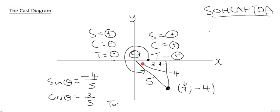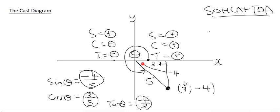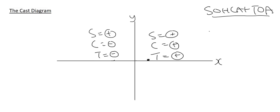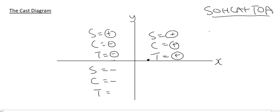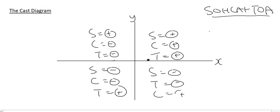Sin theta is the opposite, which is minus 4, over the hypotenuse of 5. Cos theta is the adjacent, which is 3, over 5. Tan theta is opposite over adjacent: minus 4 over 3. So sin is negative, cos is positive, and tan is negative. And in the third quadrant we confirmed sin was negative, cos was negative, and tan was positive.